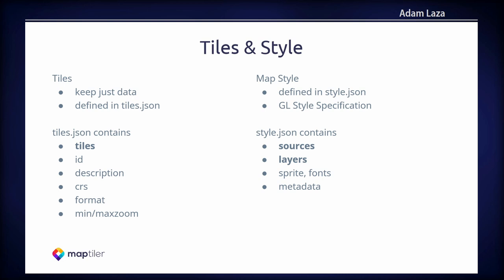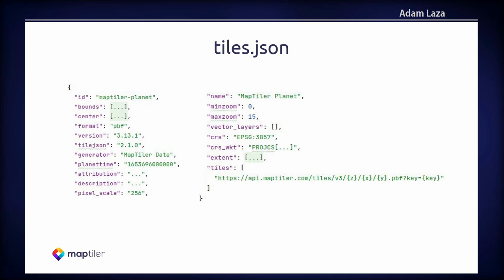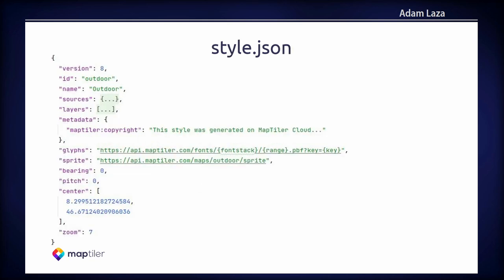As I said, tiles keep just data. Tiles are defined in tile.json, and style is defined in style.json. This is how a tile.json can look like. The important thing is that there is a key-value pair of tiles where you can see a link to an endpoint with the ZXY placeholders for the actual tiles. And this is style.json, where the important things to see are the key-value pair of layers where the style is defined, and sources where the sources of the tiles are defined. In the style.json there can be more things like definition of fonts, sprites, and other metadata.